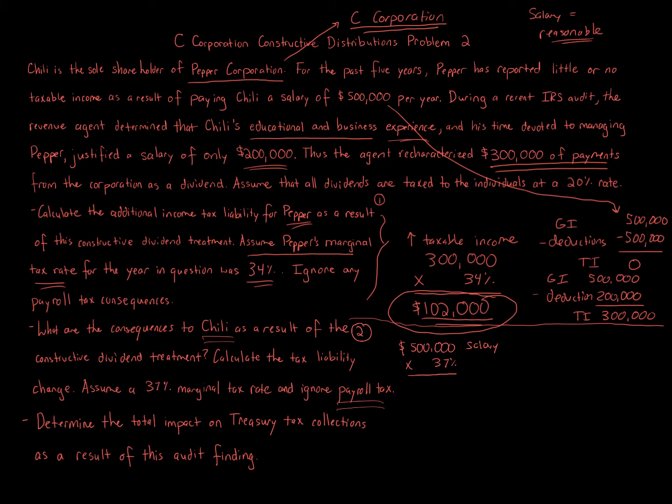Now, Chile is paying 37% on a $200,000 salary, so 37%, and in addition to that, this $300,000 difference is now treated as a dividend. Because we're told that the agent recharacterized $300,000 as a dividend. And we're told that all dividends are taxed at the individual rate of 20%, so a special dividend rate of 20%. So this is basically bad for the corporation, but better for the individual Chile.